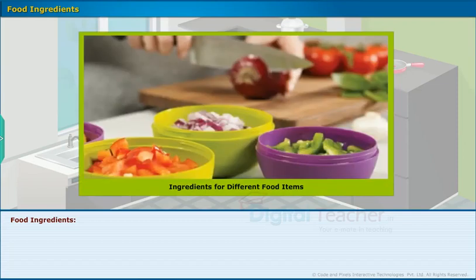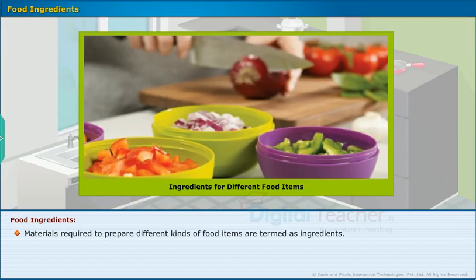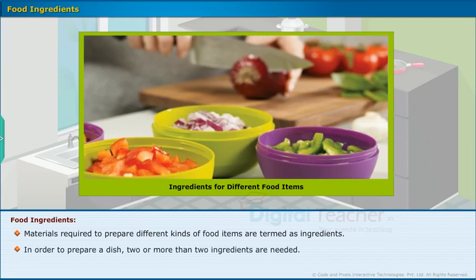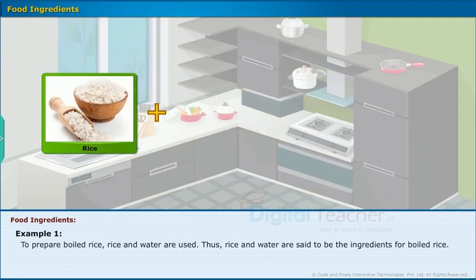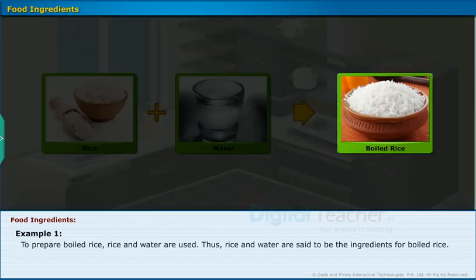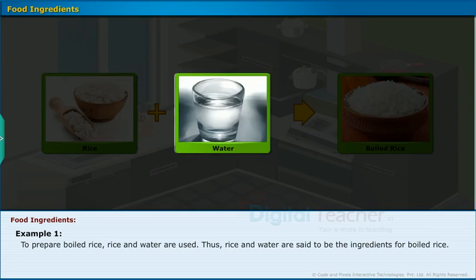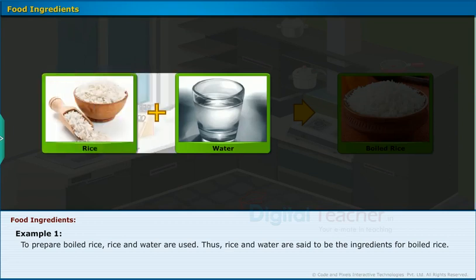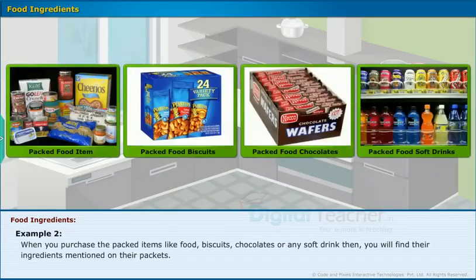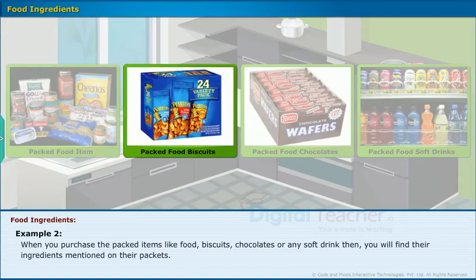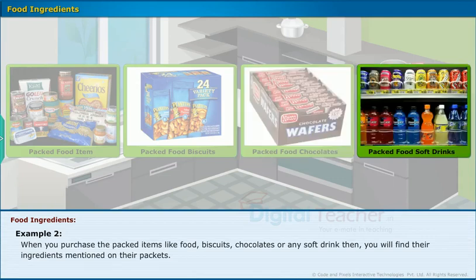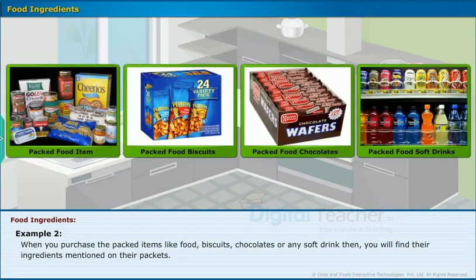Food Ingredients: Materials required to prepare different kinds of food items are termed as ingredients. In order to prepare a dish, two or more ingredients are needed. For example, to prepare boiled rice, rice and water are used — thus rice and water are the ingredients for boiled rice. When you purchase packed items like biscuits, chocolates or any soft drink, you will find their ingredients mentioned on their packets.